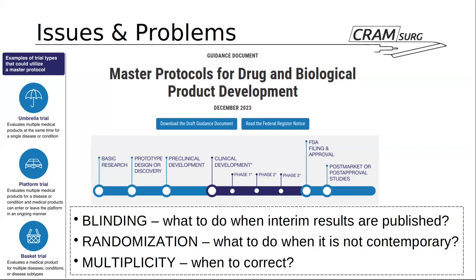Finally, multiplicity is an issue, as discussed in previous lectures. When do we correct for it? The general feeling from the FDA guidance is that if different arms are included with a common comparator, they effectively are sub-trials. Therefore, correction for multiplicity would not be necessary unless a specific subgroup analysis is performed or there are multiple comparisons done within the same group of patients. That is the simplified answer.